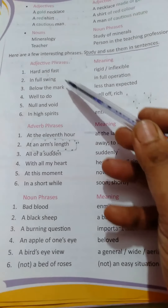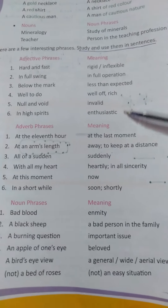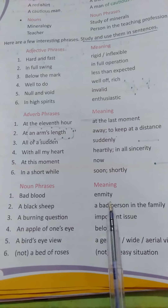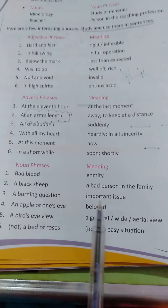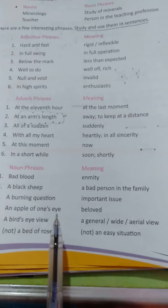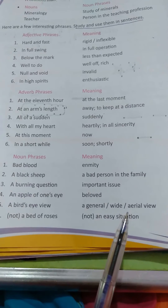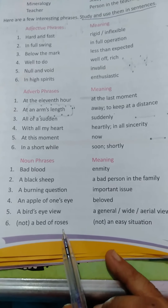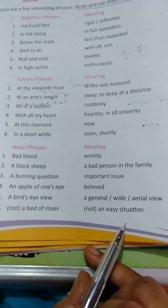Noun phrases — these are things you already know from your reader books, but now nice meanings have been given. Bad blood means animosity. A black sheep means a bad person in the family. A burning issue means an important issue. An apple of one's eye means beloved — you all are the apple of your parents' eye. A bird's eye view means a general wide aerial view from above. A bed of roses means an easy situation — life is not a bed of roses.